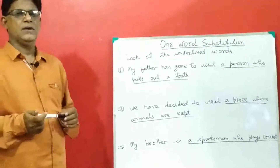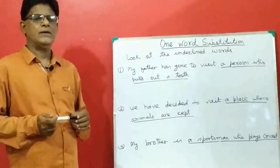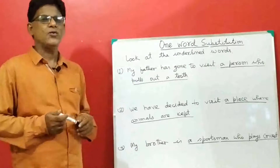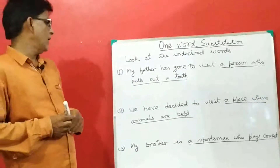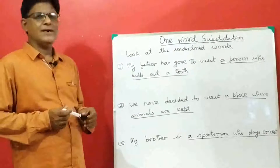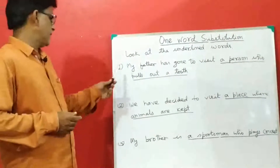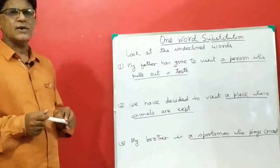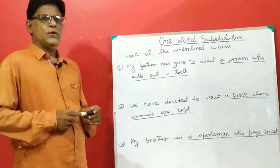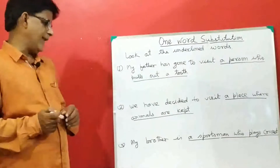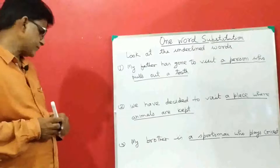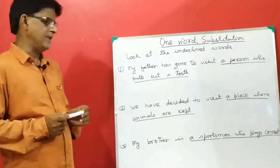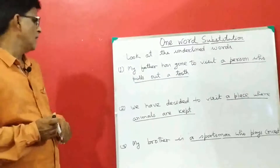Hello students, good evening, welcome to English grammar class. Our today's lesson is one word substitution. Look at the underlined words: my father has gone to visit a person who pulls out a tooth. Number two: we have decided to visit a place where animals are kept. And number three: my brother is a sportsman who plays cricket.